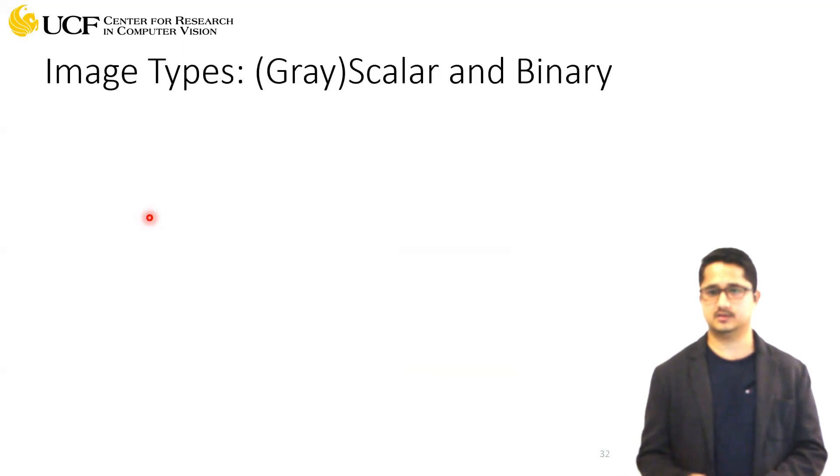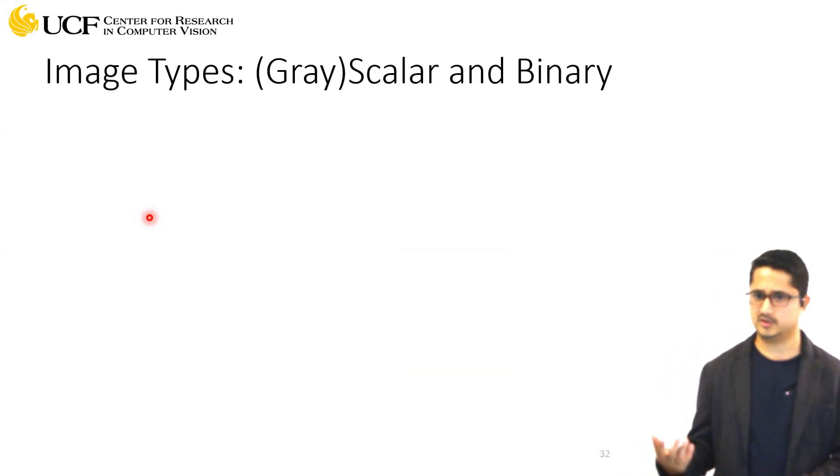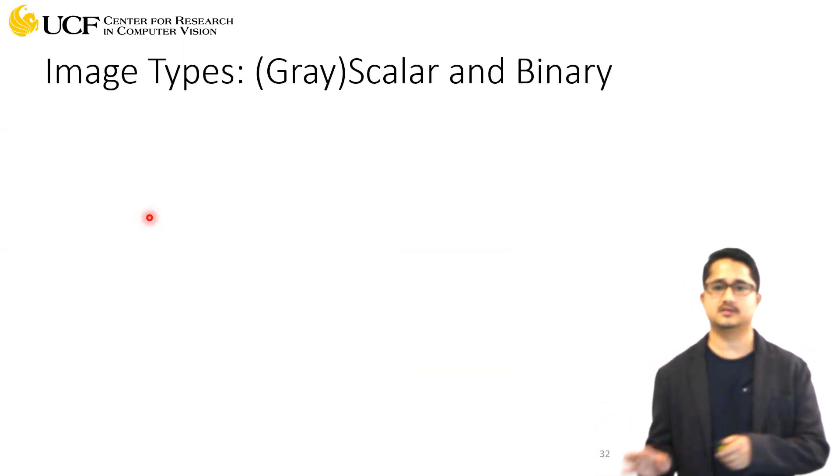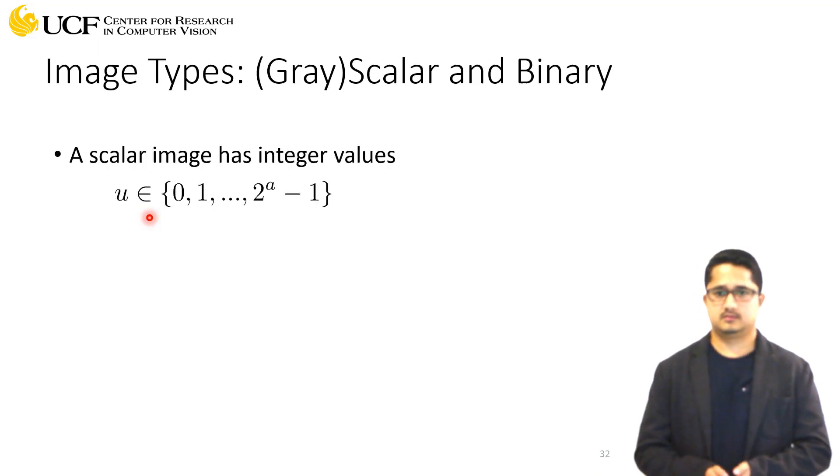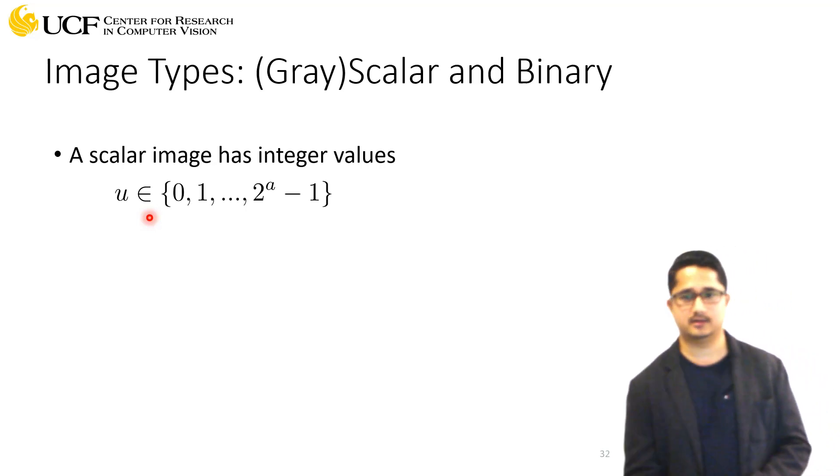There are two types of images: grayscale and colored images. We'll talk about colored images later. Let's first understand grayscale images. We have that array, and each pixel is a number between a range from zero to...